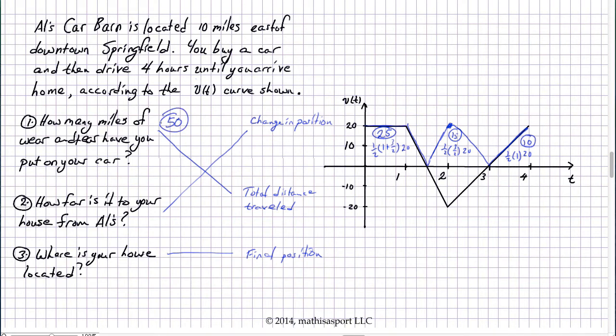Okay now how far is it to your house from Al's? Again we don't need to know the initial position of Al's car barn. What we need to know is how has the position changed from the start of your trip until the end. Because it says that you drove for four hours from Big Al's and you finally arrive home. So here we're calculating the area under the velocity curve, the black. So that signed area is going to be 25, negative 15, and 10. And so how far away is your house from Al's car barn? 25 minus 15. That takes us down to 10. Plus 10 is 20.